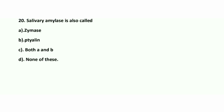Question number 20 — the last question: Salivary amylase is also called what? The other name of salivary amylase is Ptyalin. Option B is the right answer. These are your 20 MCQs. After watching this video, please comment in the comment box. Thank you, have a nice day.